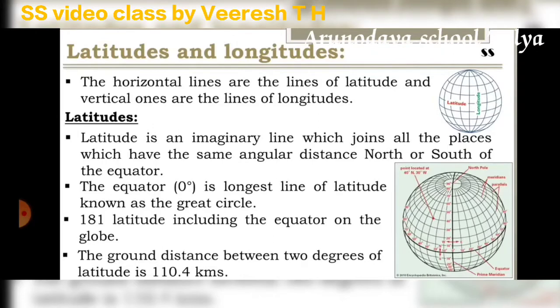Latitude is an imaginary line which joins all the places which have the same angular distance north or south of the equator.